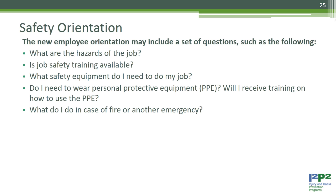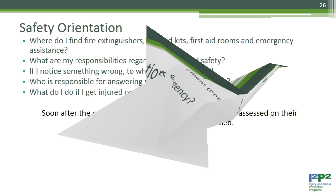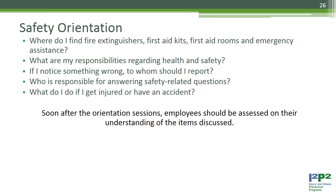The new employee orientation may include questions such as: What are the hazards of the job? Is job safety training available? What safety equipment do I need? Do I need to wear PPE, and will I receive training on how to use it? What do I do in case of fire or another emergency? Where do I find fire extinguishers, first aid kits, first aid rooms, and emergency assistance? What are my responsibilities regarding health and safety? If I notice something wrong, to whom should I report? What do I do if I get injured or have an accident? Soon after orientation, employees should be assessed on their understanding.